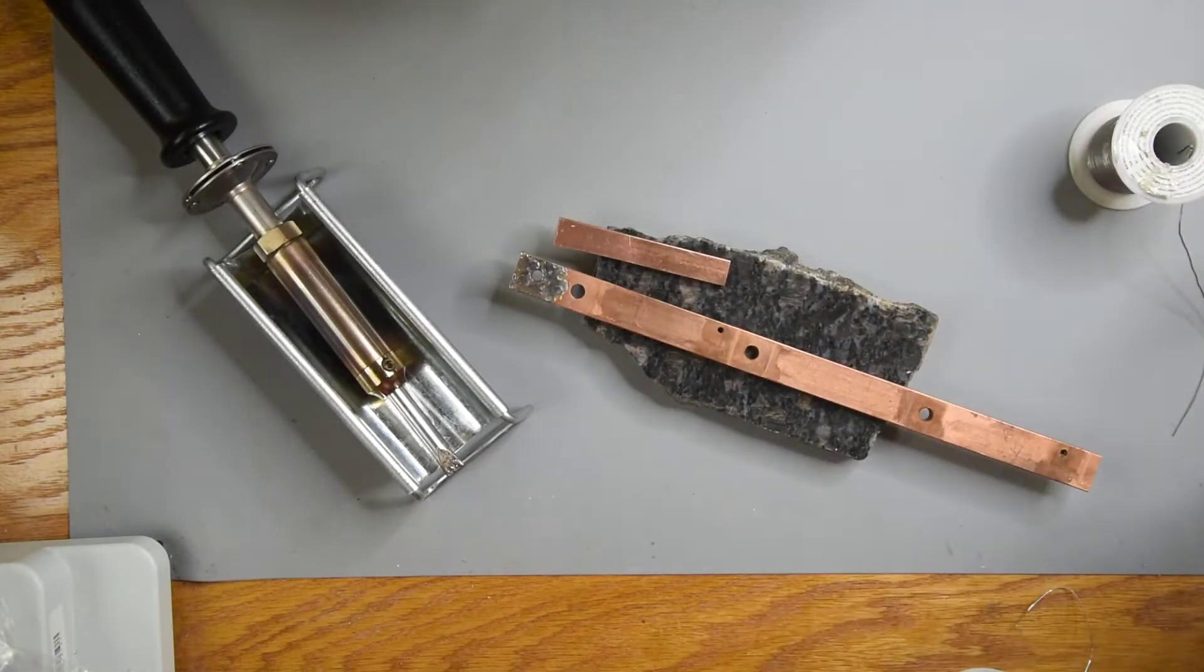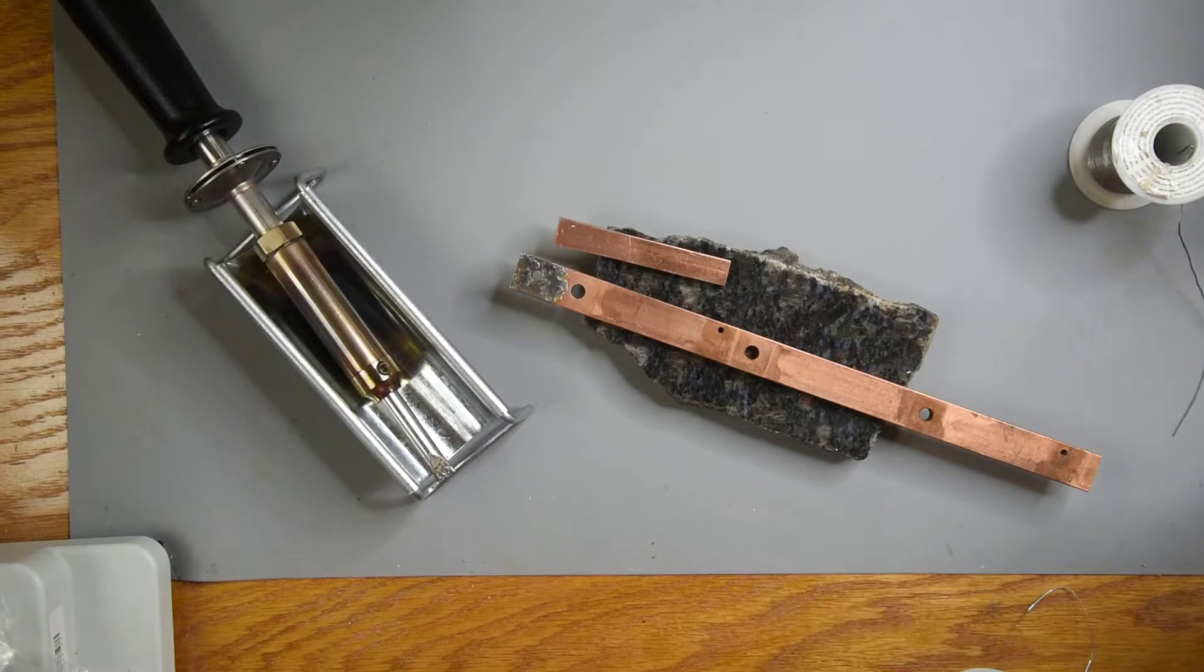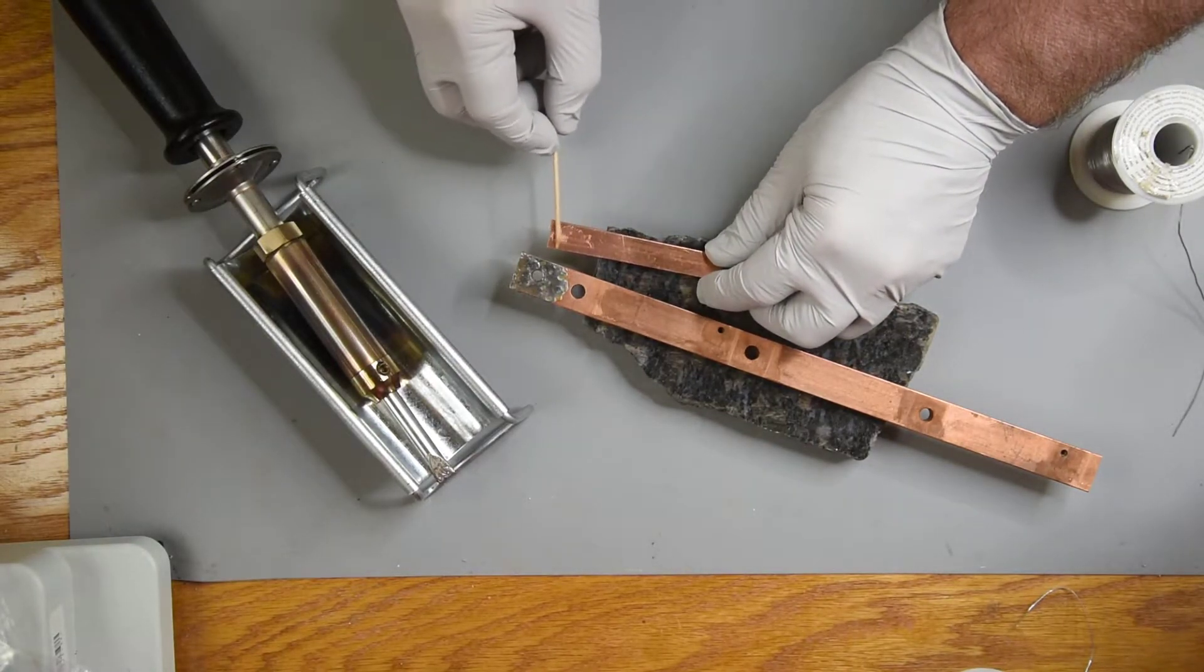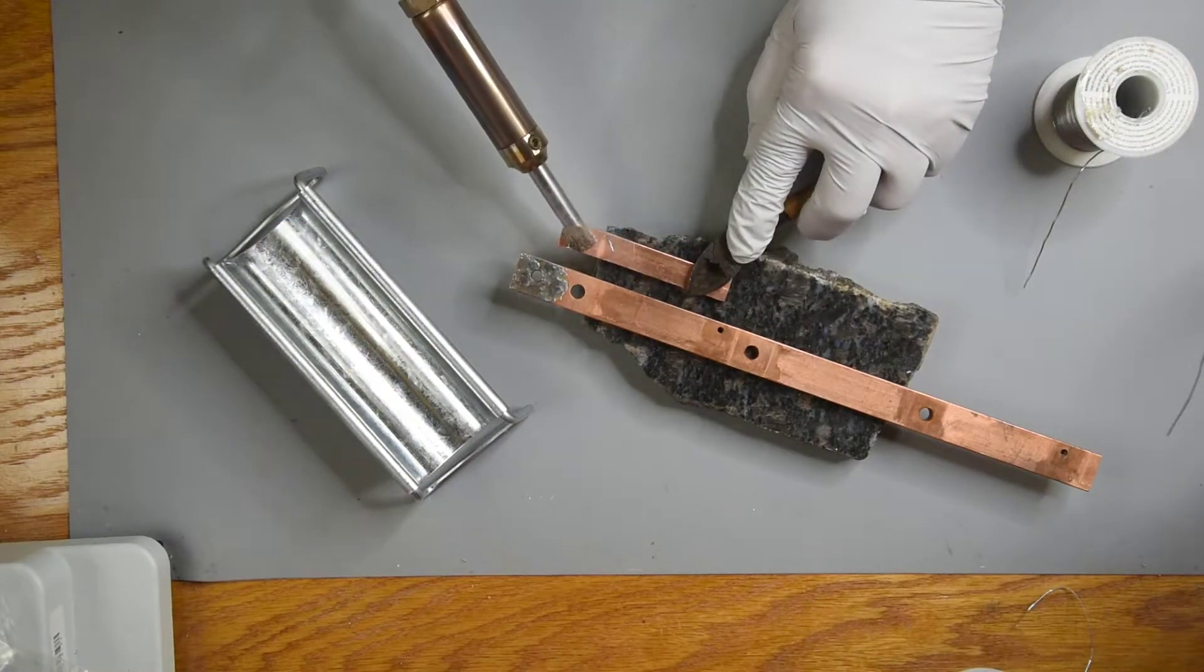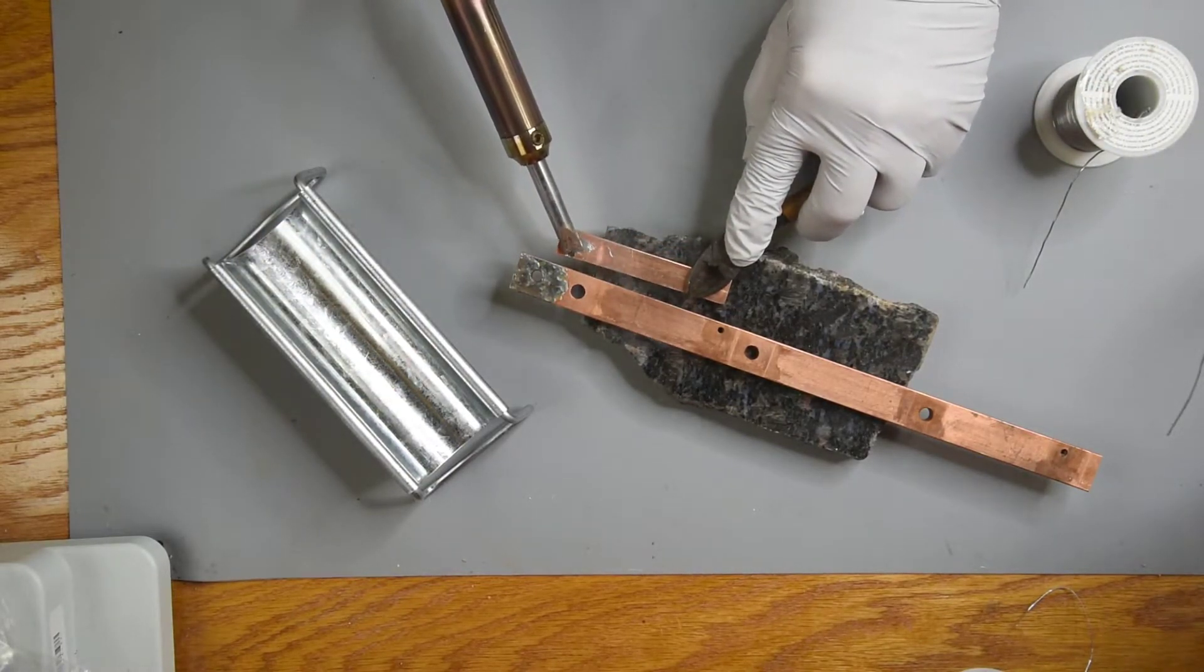This little piece is a quarter inch thick by a little over half inch wide. If this iron will solder these two together, I'm golden. I'm putting some extra flux on. Of course, this small piece heats up fast.